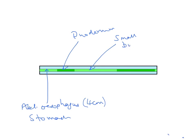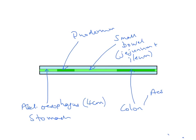The next bit is going to be small bowel, referring to the jejunum and the ileum. The next dark green bit refers to the colon — the ascending colon, transverse colon, descending, and finally the sigmoid. Then the last tiny bit at the end is going to be the rectum. The anus has not been included as a particular structure in this section.